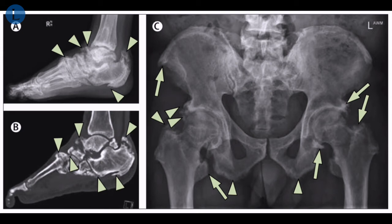In X-linked hyperphosphatemia, there is poor absorption of phosphate in the intestine and impaired renal tubular reabsorption, leading to hypophosphatemia and pathological mineralization of the tendons and ligaments.